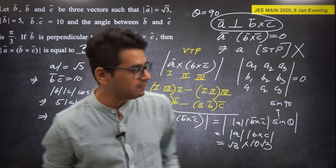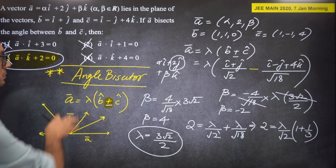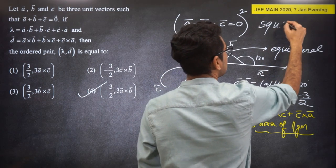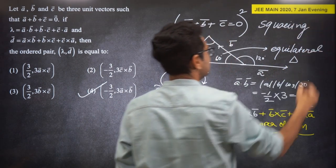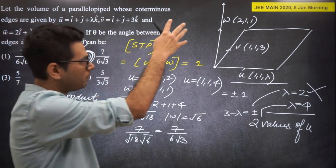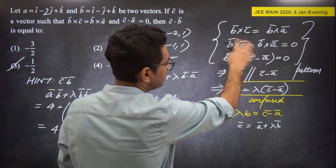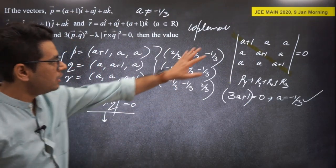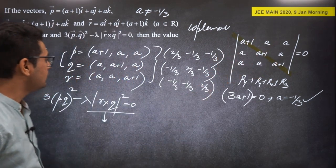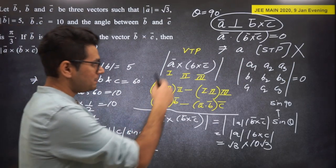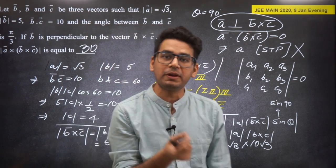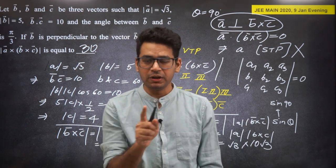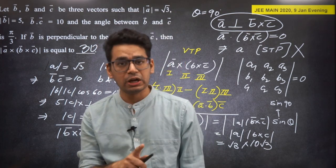Quick revision of 2020 questions: Q1 = angle bisector concept; Q2 = squaring pattern for dot product; Q3 = STP/volume of parallelepiped; Q4 = vector equation pattern (C = A + lambda*B); Q5 = coplanarity condition; Q6 = VTP. Six questions, six different concepts — no repetition. That's what learning mode means.